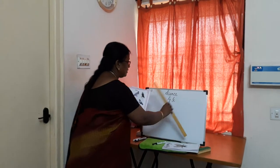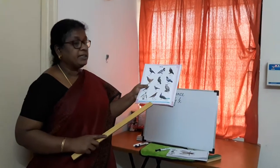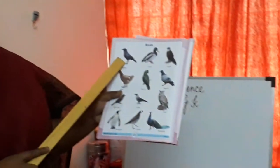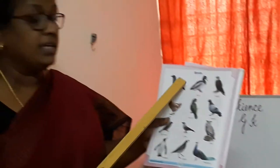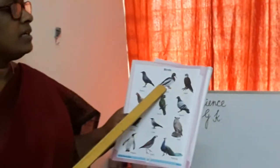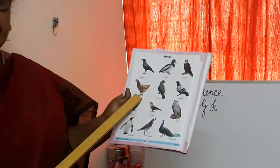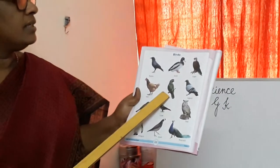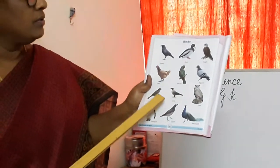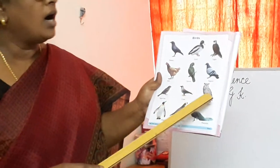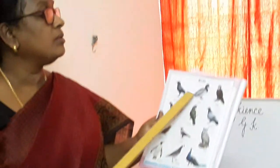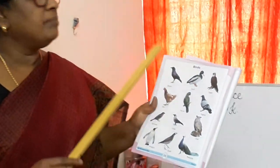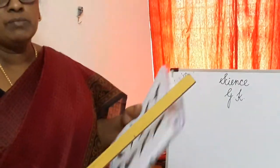Okay children. Take page number 66 and look at here. What is this? Raven, duck, eagle, hen, parrot, pigeon, sparrow, crow, owl, penguin, quail, peacock. These are all the birds you learnt. Before naming the birds you must tell the names of birds. What you have to say? Names of birds.